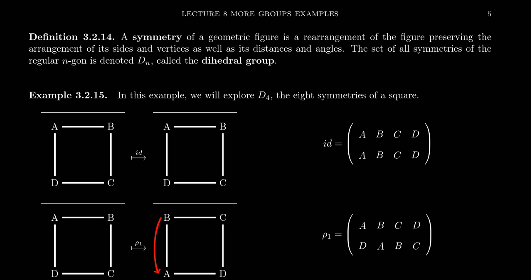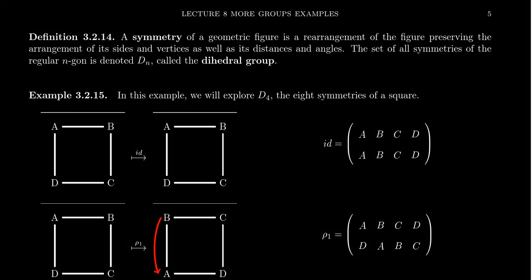A symmetry of a geometric figure is a rearrangement of the figure that preserves the arrangements of its sides and vertices, as well as distances and angles. Basically, a symmetry is just a permutation of some geometric object, like a polygon or polyhedron, where you move the vertices around in such a way that it still retains the original shape. The set of all symmetries of the regular n-gon — a polygon with n equal sides and equal angles — we will denote as DN, and this is called the dihedral group.